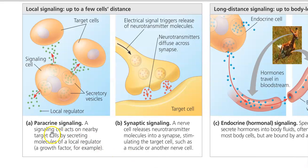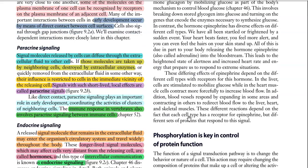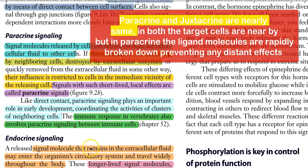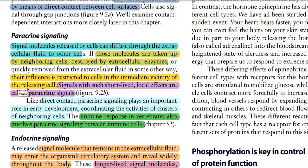In paracrine signaling, a signaling cell acts on nearby target cells by secreting molecules of a local regulator. Signal molecules released by cells can diffuse through the extracellular fluid to other cells. Those molecules are taken up by neighboring cells or may be destroyed by extracellular enzymes, and their influence is restricted to cells in the immediate vicinity of the releasing cell.